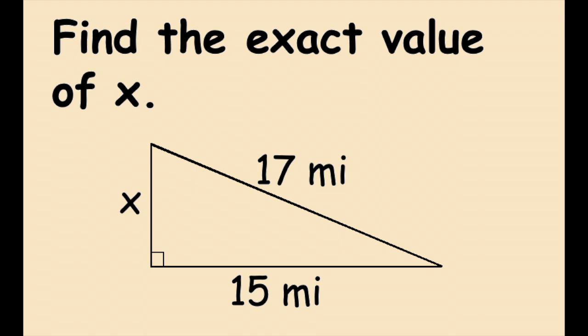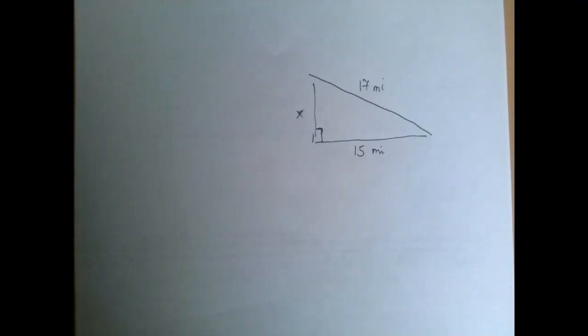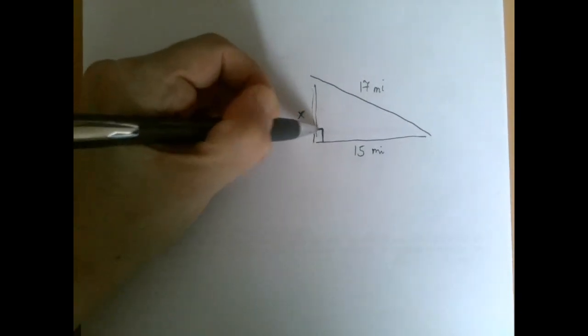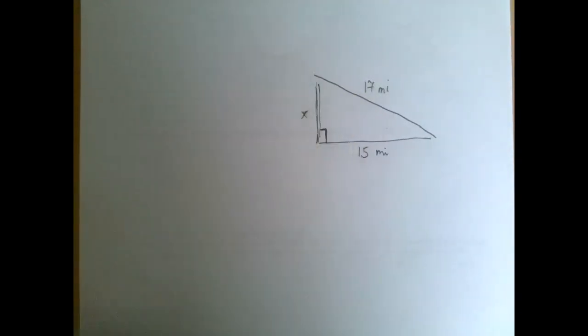So we have to find the missing side. This is going to be an application of the Pythagorean theorem. Whenever you apply the Pythagorean theorem, make sure that you're working with confirmed right angles, not just angles that look right. They could be 89 and a half degrees for all we know. So look for this little right angle symbol. This here is a right triangle.